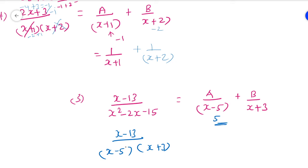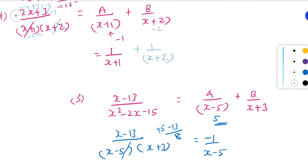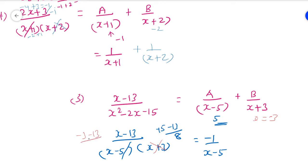Substitute x equals 5, discarding the (x minus 5) factor: (5 minus 13) divided by (5 plus 3) equals minus 8 divided by 8 equals minus 1. So A equals minus 1/(x minus 5). Next, substitute x equals minus 3, discarding (x plus 3): (minus 3 minus 13) divided by (minus 3 minus 5) equals minus 16 divided by minus 8 equals 2. So B equals 2/(x plus 3).